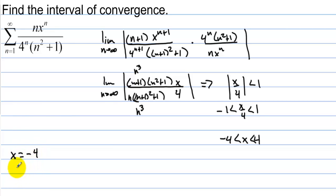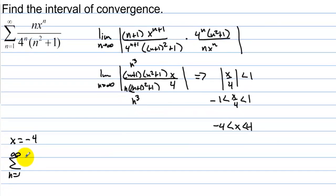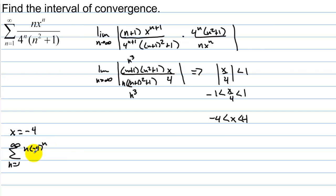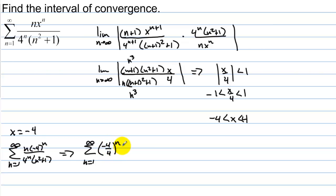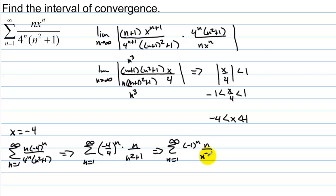We have x equals negative 4. When we plug this in, we have n equals 1 to infinity of n times negative 4 to the n over 4 to the n times n squared plus 1. Looking at negative 4 over 4 to the nth power, negative 4 over 4 is negative 1, so this becomes an alternating series: n equals 1 to infinity of negative 1 to the n times n over n squared plus 1.